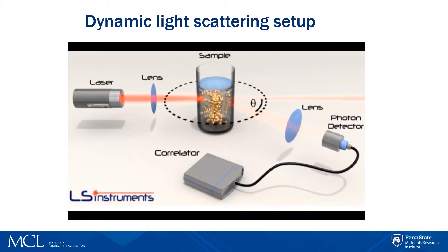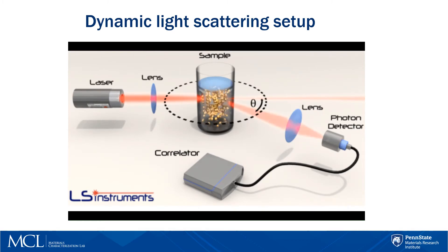The instrumental setup is simple. The sample is illuminated by a monochromatic laser beam. Particles scatter the light, and the interference of scattered waves generates a scattered light intensity signal. Since suspended particles undergo Brownian motion, this motion results in fluctuations of the scattered light intensity.